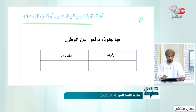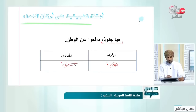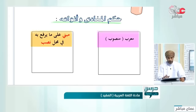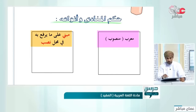هيا جنود دافعوا عن الوطن. أسلوب النداء هو 'هيا جنود'. الأداة 'هيا' والمنادى 'جنود'. نلاحظ اختلاف الحركات الإعرابية في آخر المنادى وسوف نتطرق إليه الآن في ثالثاً: حكم المنادى وأنواعه.